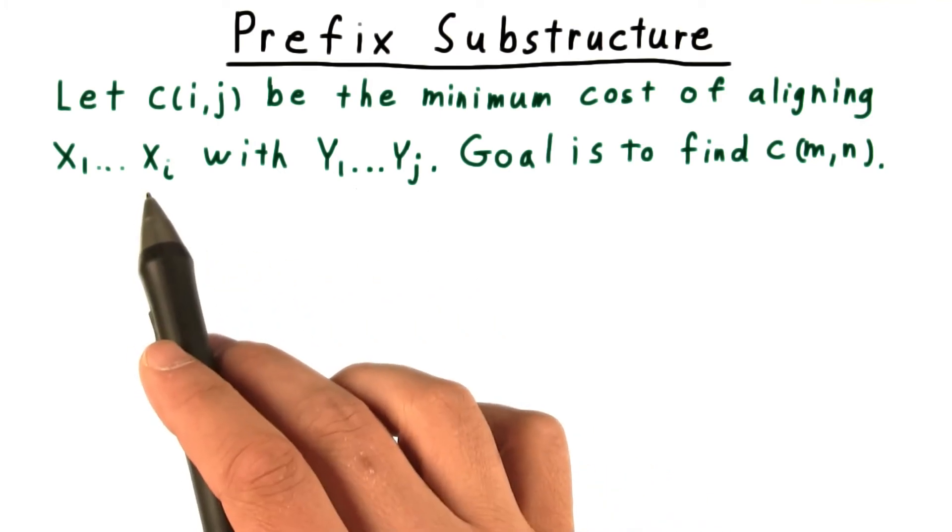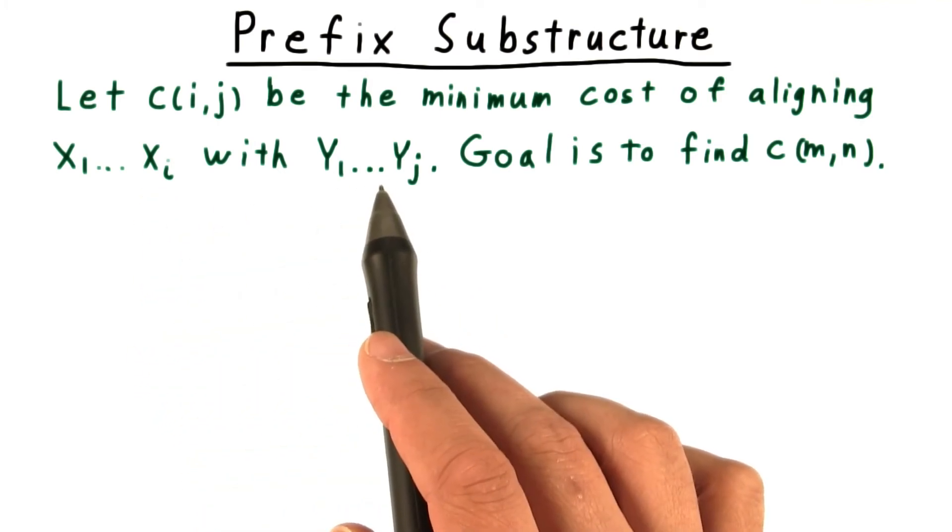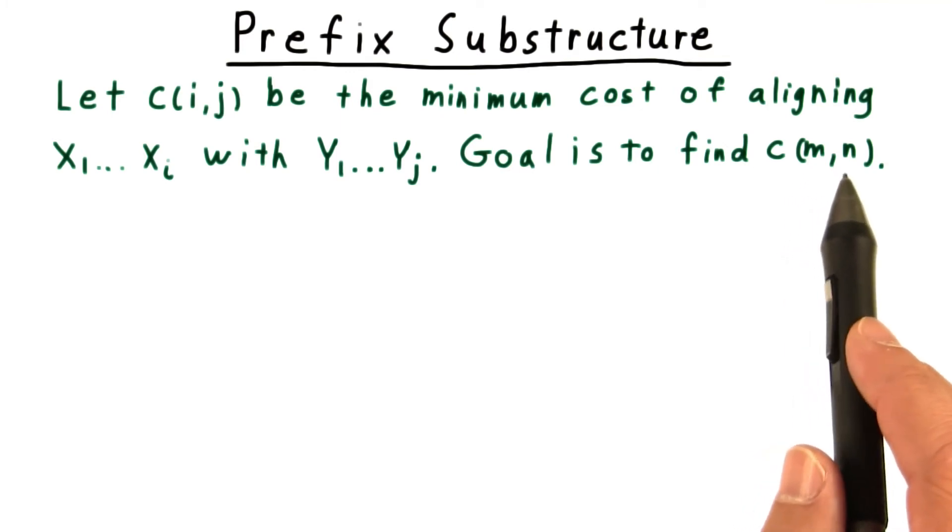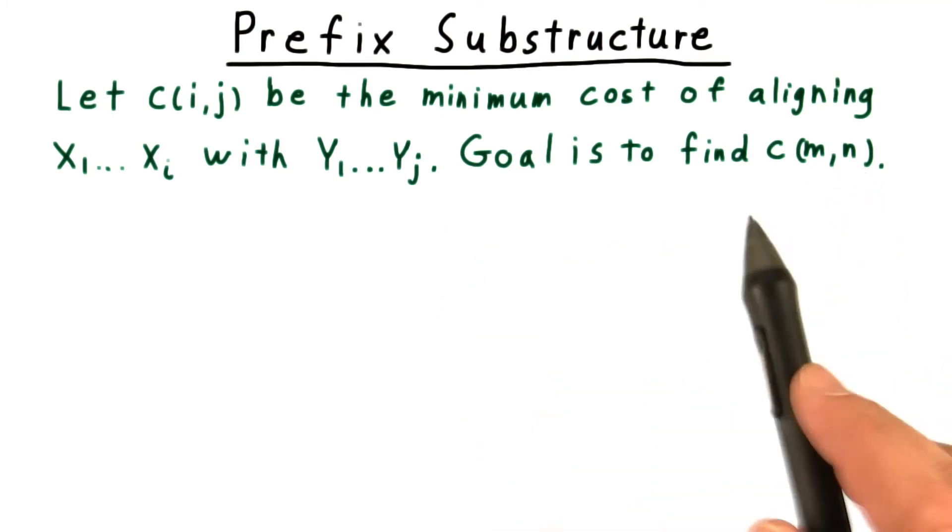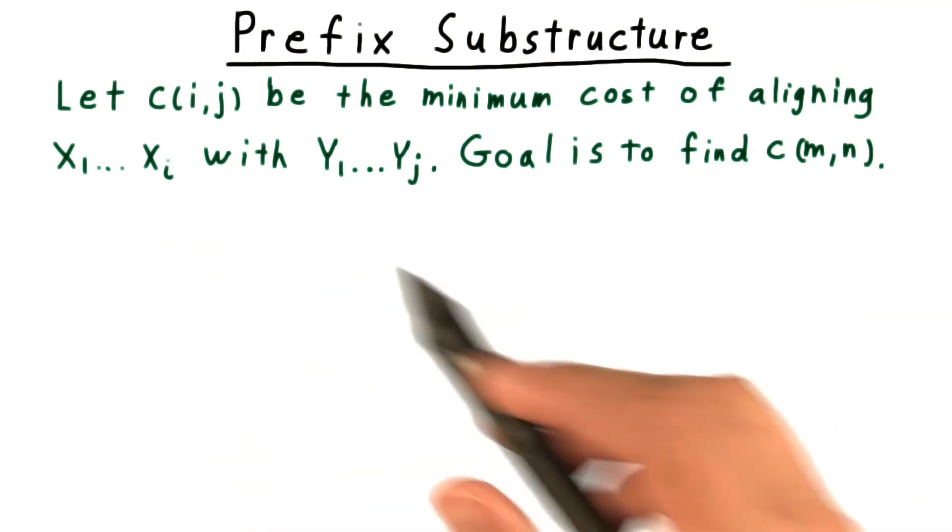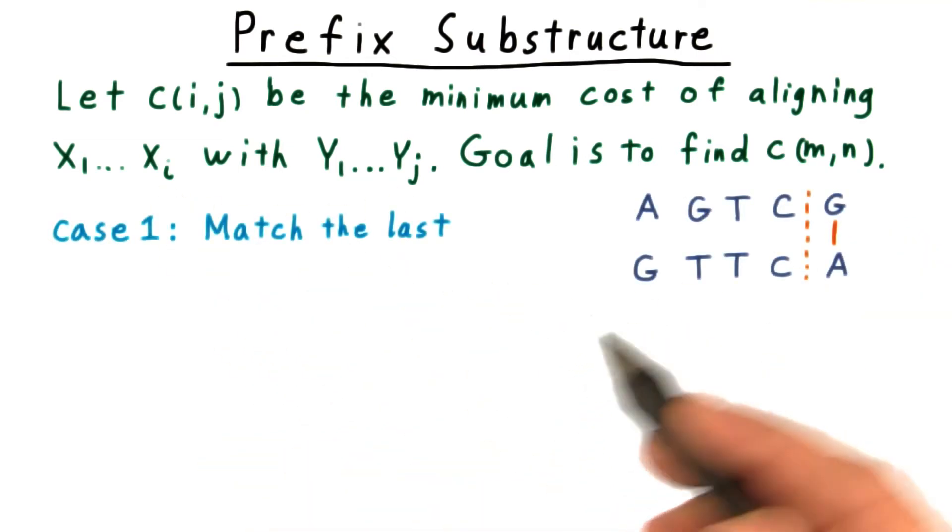Since x has m characters total and y has n characters, our overall goal is to compute C(m,n) and the alignment that achieves it. Let's consider this problem of computing C(m,n), and in particular, we'll consider what we do with the last characters of each sequence. There are three cases to consider.